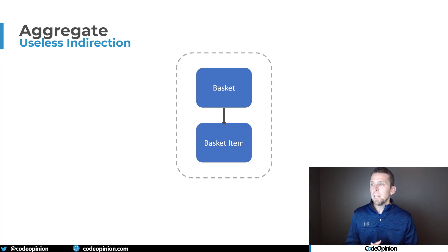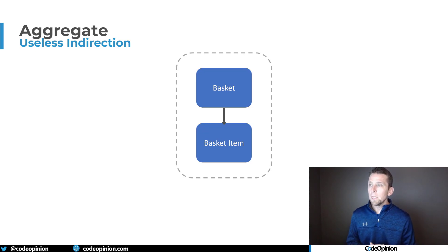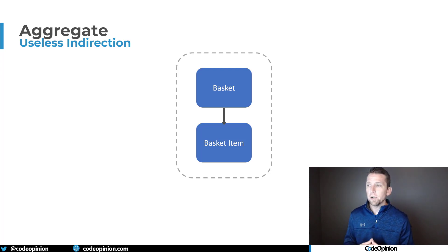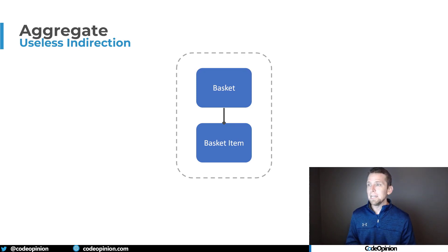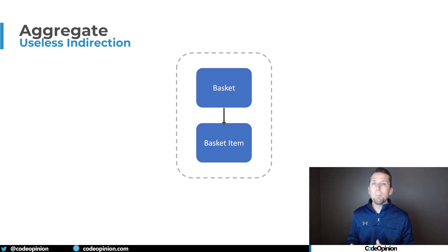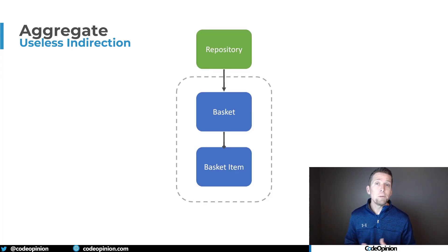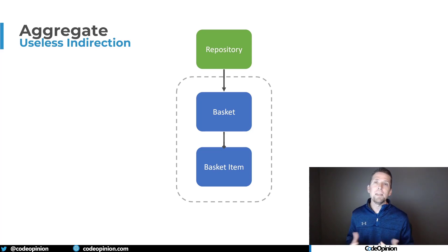The idea, which is always given as an example, is if we think of an aggregate — say we have a shopping basket and basket items underneath it. People explain that an aggregate is going to have an aggregate root, which will be the basket. All interactions in terms of performing state changes are going to be through the basket, which in turn makes state changes to the basket item. So if we need to add an item, we'd be doing it to the basket — we won't be directly dealing with a basket item. Then people jump to repositories as a way to retrieve and persist your aggregate.